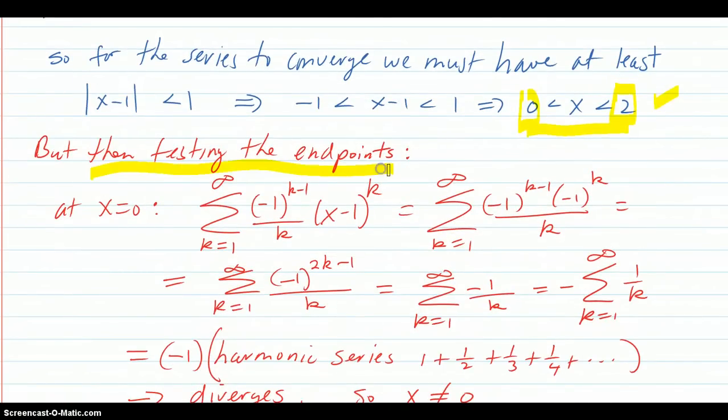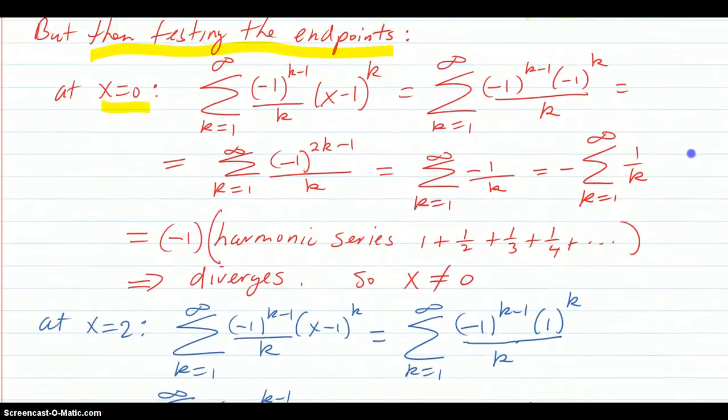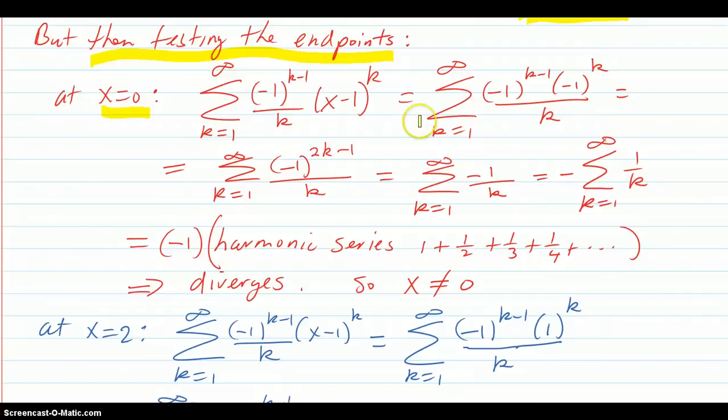Testing the endpoints at zero, we did this already, so I'm just going to show it here again. We got all this, came out that it was negative one factored out, negative one times the harmonic series, which was this. So that diverged. So x is not zero.